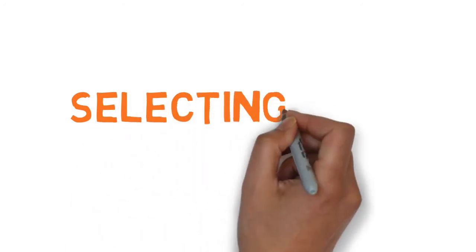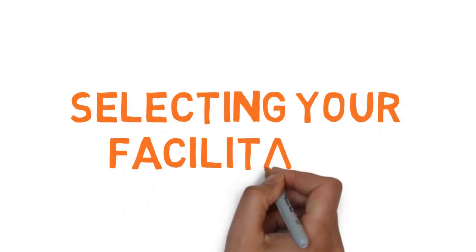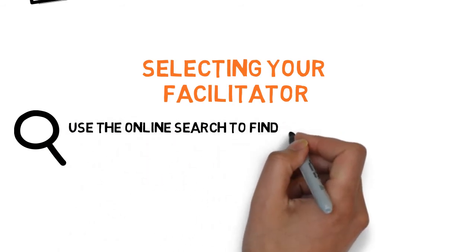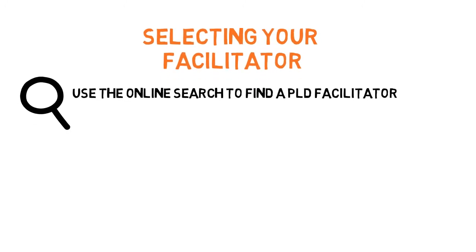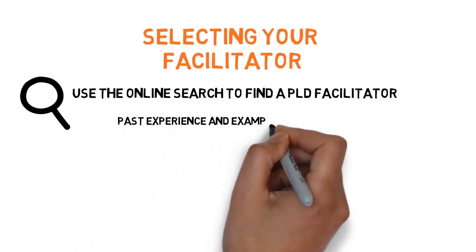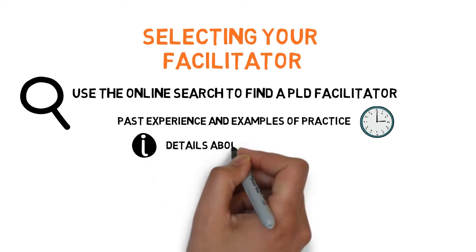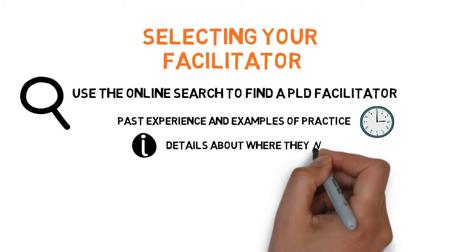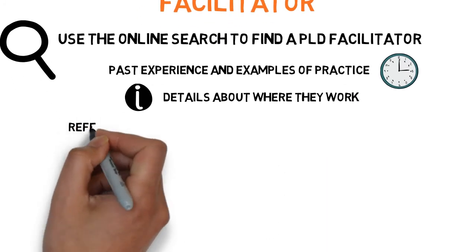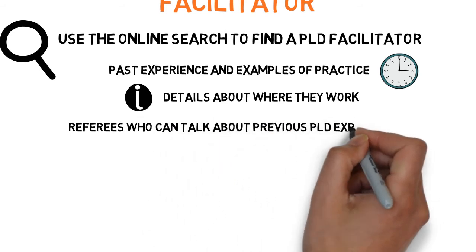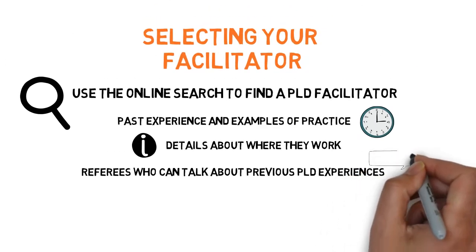Thirdly, selecting your facilitator. Use the search function on the PLD website to find your facilitator or facilitators for your centrally funded PLD. On the website you can find out about each facilitator, including their past experience and examples of their practice, details about the region and what medium they can work in, school level and digital links to further information, their areas of specialisation, and referees who can talk about the work done in their schools. When you have found a facilitator who meets your needs, use the contact details on the website to get in touch with them directly.